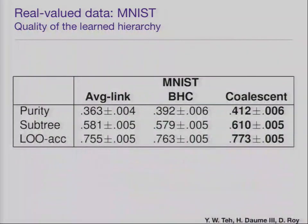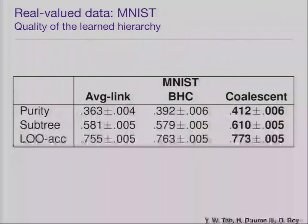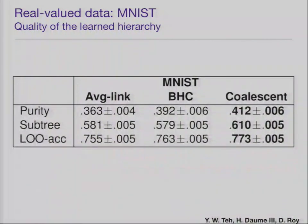This is the average linkage — the classical linkage algorithm I mentioned earlier. This is Bayesian hierarchical clustering, done by Zubin and Catherine Heller. And this is the coalescence. These results are from their NIPS 2008 paper. Comparing these in terms of purity, subtree, and leave-one-out accuracy. Purity is when you look at the subtrees that are constructed and ask what percentage of these subtrees are pure — meaning what percentage have data points belonging to only one particular flat clustering label.